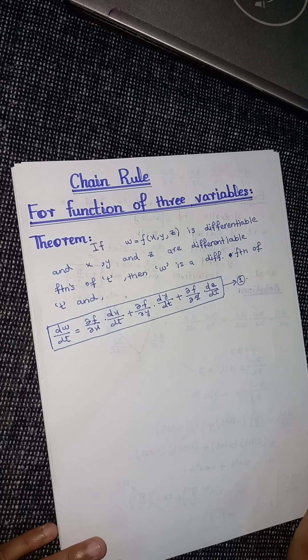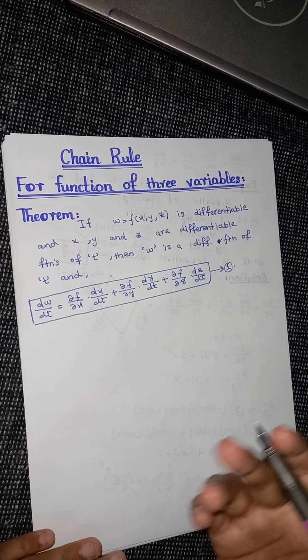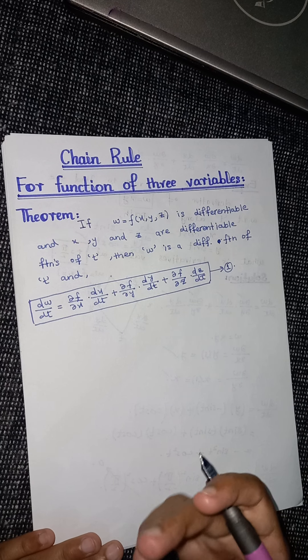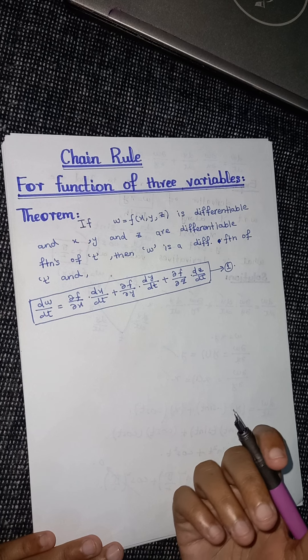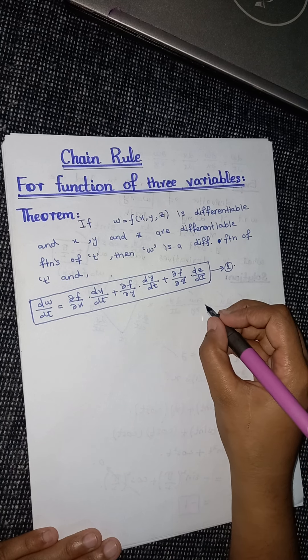Now, how can we look at a picture and understand what this formula says, or how we can easily remember and recall it? Suppose you have a function w = f(x, y, z). Here w is the dependent variable, because x, y, and z are the independent variables.